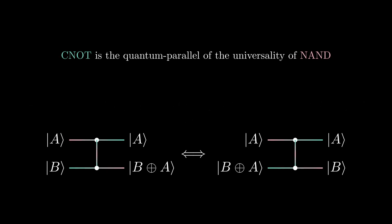CNOT is actually a special gate, because all multiple qubit logic gates can be composed of purely CNOT and single qubit gates. In this sense, it's the quantum parallel of the universality of NAND.